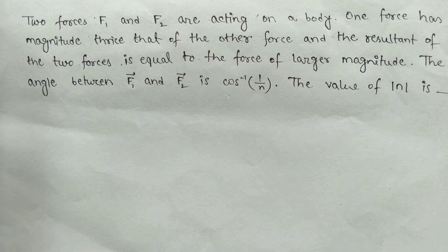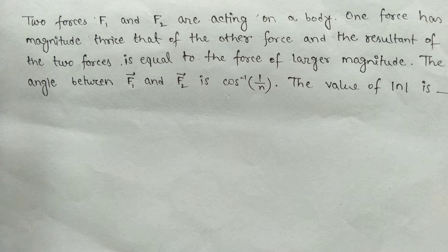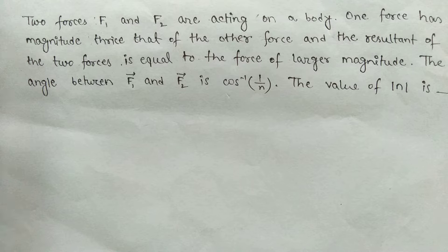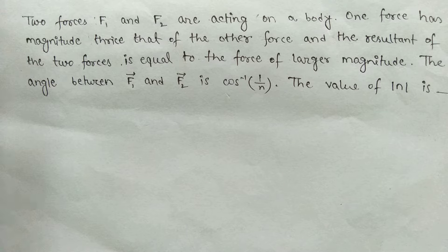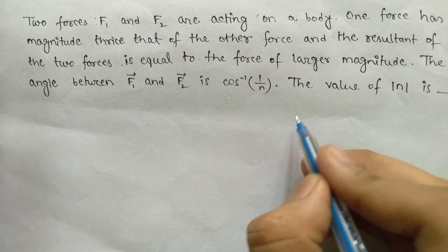Two forces F1 and F2 are acting on a body. One force has magnitude thrice that of the other force, and the resultant of the two forces is equal to the force of the larger magnitude. The angle between F1 and F2 is cos inverse of 1 by n. Find the value of mod n.